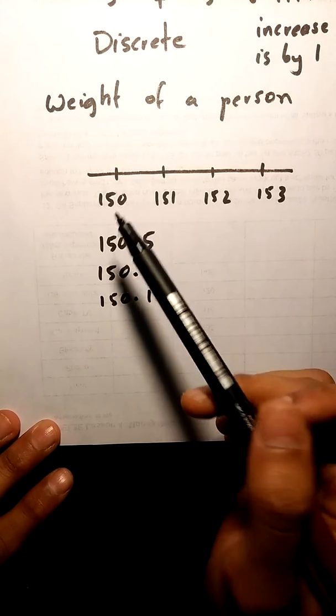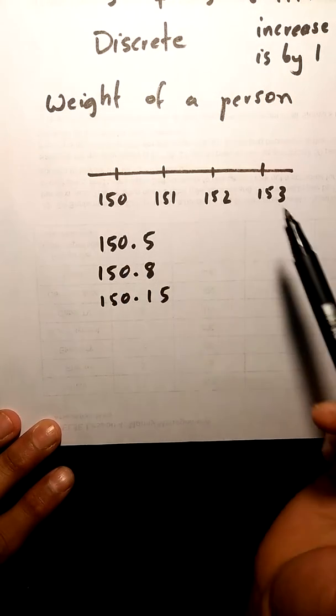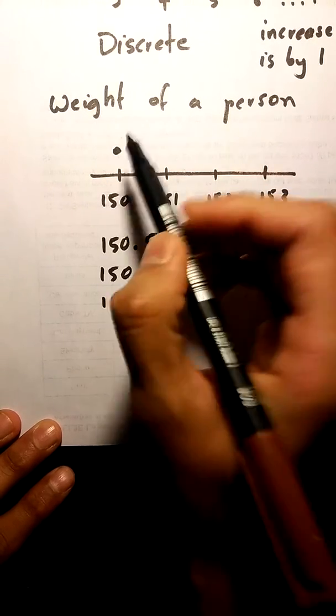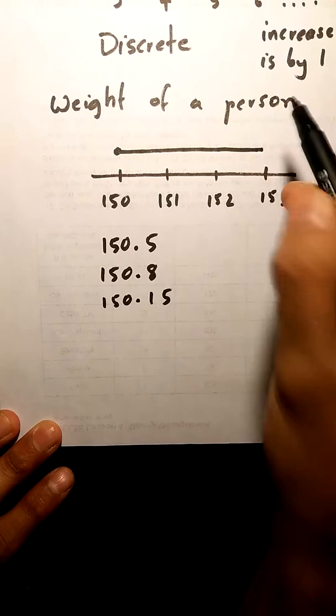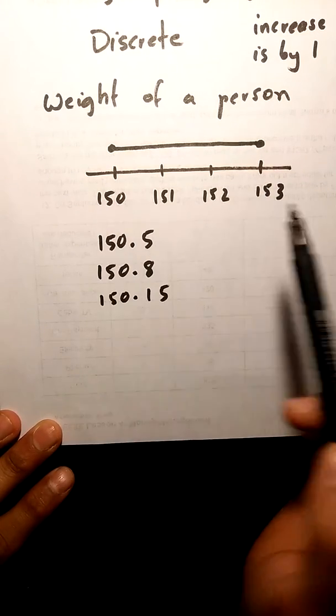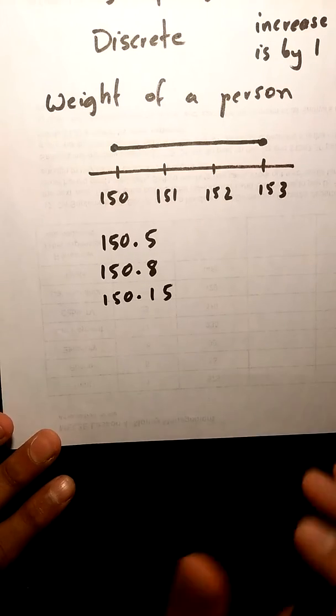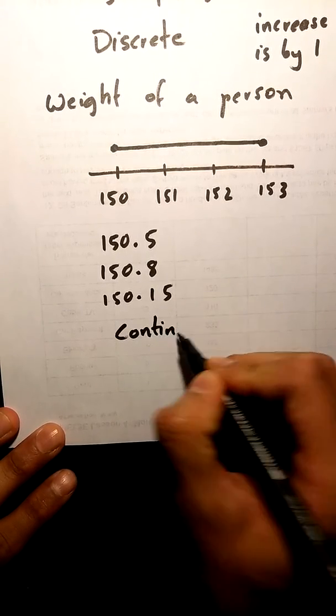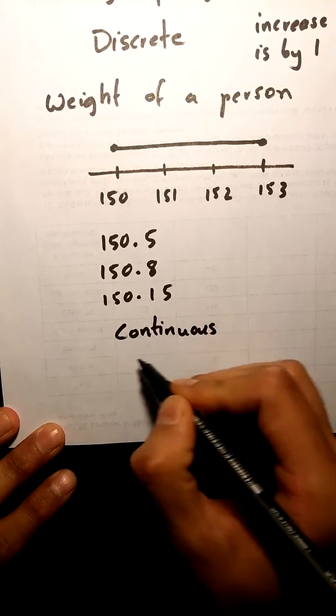So say for example, your weight was increasing from 150 to 153 pounds. Your weight would take every single value in between. There would be no number between 150 and 153 that your weight would not hit, which means that it's a continuous variable.